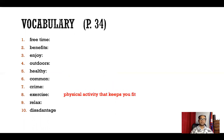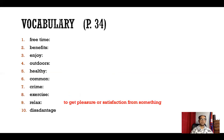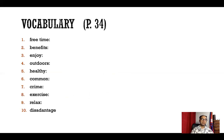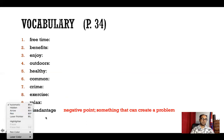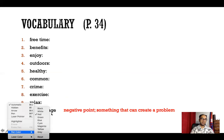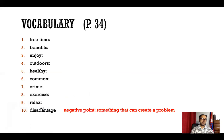Crime is an action that is against the law, which is prohibited by the law — something really bad. Exercise is physical activity that keeps you fit — for example, you go out to the park and exercise. Relax means to get pleasure or satisfaction; for example, when I want to relax, maybe I listen to music or lie on my couch. Disadvantages are negative points, something that can create a problem. You have to submit this through Google form as your homework.